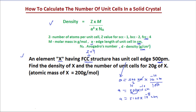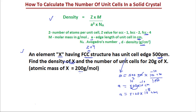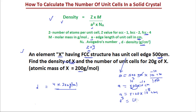The next part of the problem asks us to find the density of element X, whose atomic mass is 200 grams per mole. We apply the density formula: D = Z × M divided by A³ × N. Z equals 4 for the FCC structure, atomic mass M is 200 grams per mole, and the volume of the unit cell A³ uses A = 5.00 × 10⁻⁸ centimeters cubed.